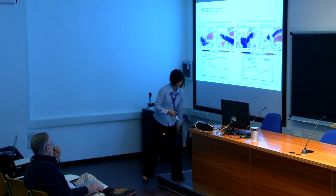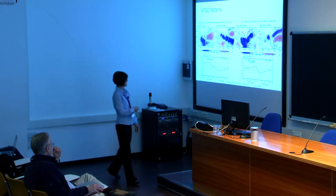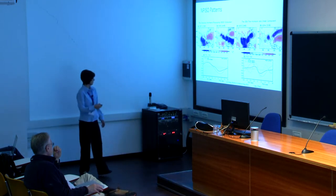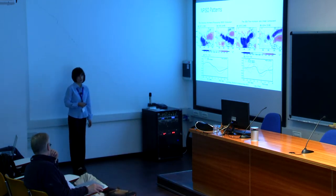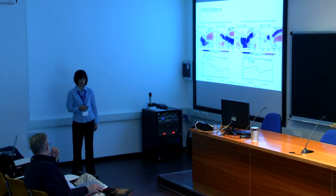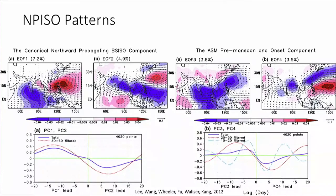With these UIFs you can also do Wheeler-Hendon-style diagrams and look at the evolution of these oscillations. Any questions about the tropical variability before I move to the mid-latitude intraseasonal variability?